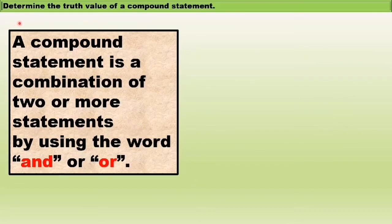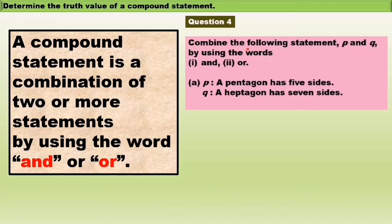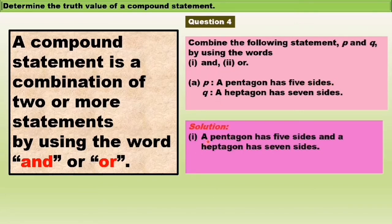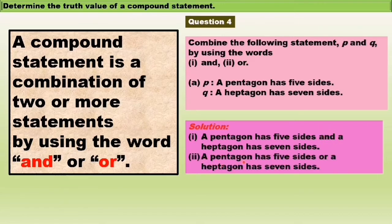Now we learn what is a compound statement. A compound statement is a combination of two or more statements using the word 'and' or 'or.' Question number 4: combine the following statements P and Q using the words 'and' and 'or.' A: P is 'A pentagon has 5 sides,' Q is 'A heptagon has 7 sides.' Using 'and': 'A pentagon has 5 sides and a heptagon has 7 sides.' Using 'or': 'A pentagon has 5 sides or a heptagon has 7 sides.'